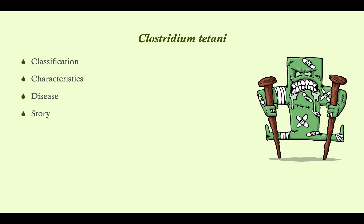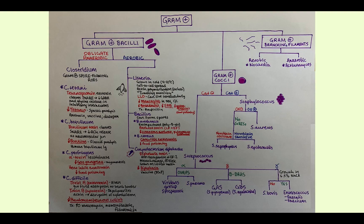We'll talk about the characteristics and the major disease that Clostridium tetani causes, which is tetanus. So this is our algorithm here — it's modified compared to when we talked about the cocci. There are going to be seven bacilli that you'll need to be familiar with. One genus is an obligate anaerobe, with four members, and we're starting with Clostridium tetani. This is an obligate anaerobe, as are all the Clostridium species.